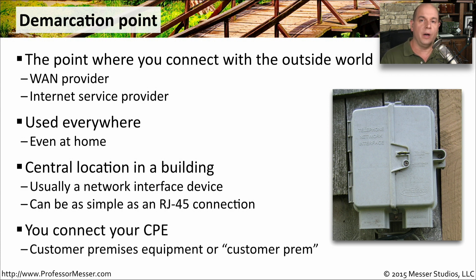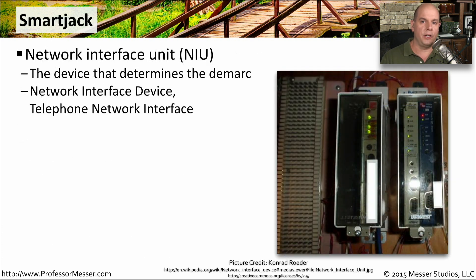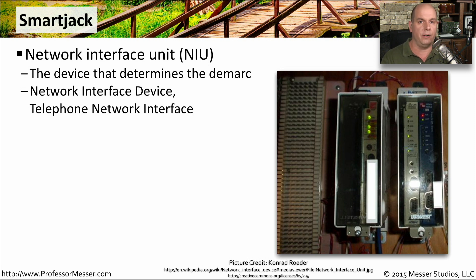This is also the place where you commonly connect your CPE — Customer Premises Equipment. That means your router, your CSU, DSU, and anything else that is your responsibility is the customer premises equipment. WAN providers often refer to this as the Customer Prem. The network connection that creates that demarcation between the inside and the outside is often referred to as a network interface unit, or NIU. You might also hear this referred to as a network interface device, or a telephone network interface.